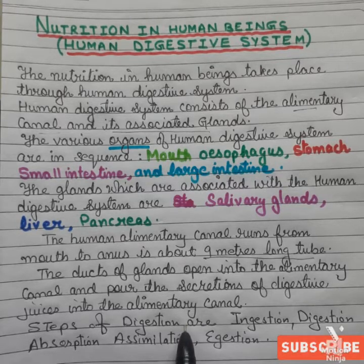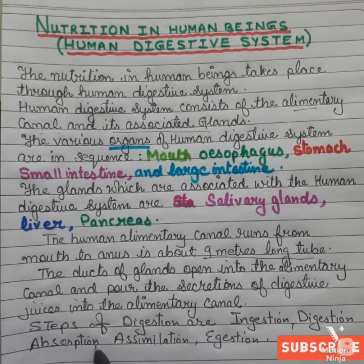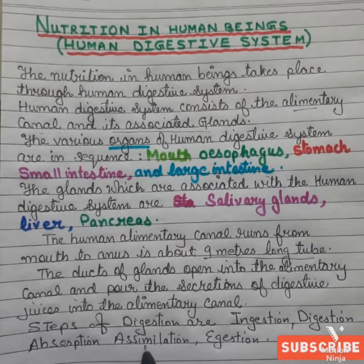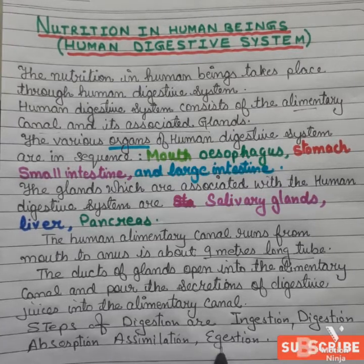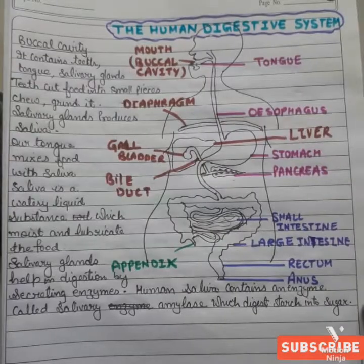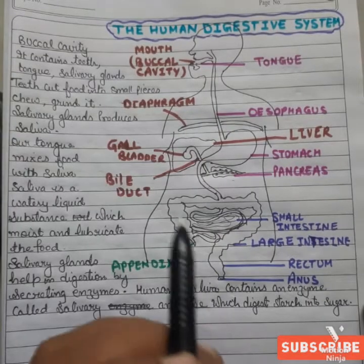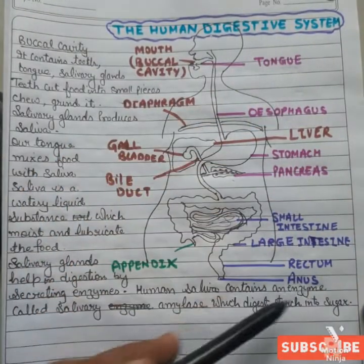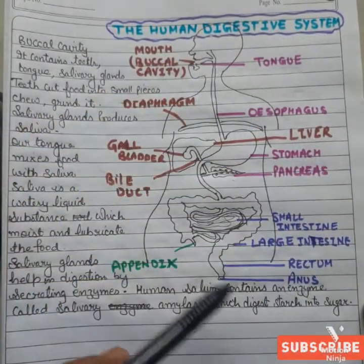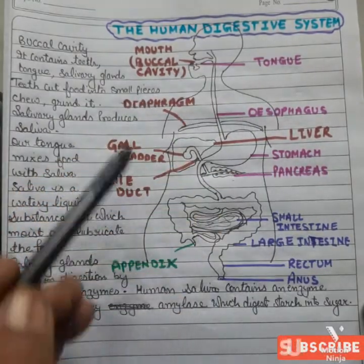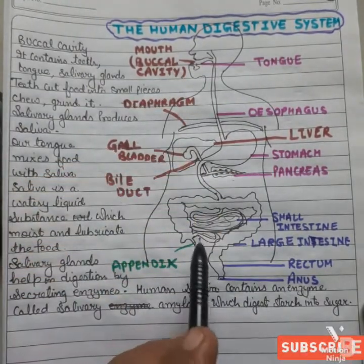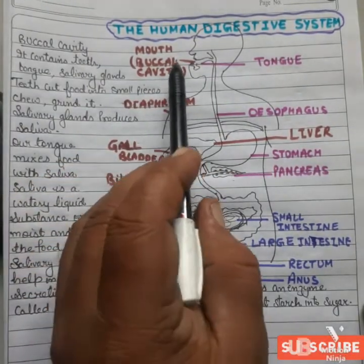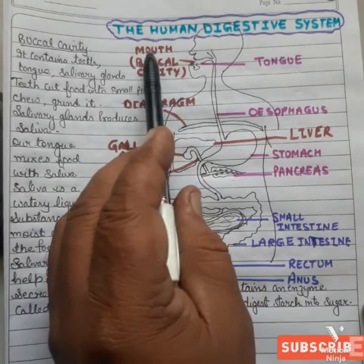The steps of digestion are: first, ingestion; second, digestion; third, absorption; fourth, assimilation; and last, egestion. Now we are going to discuss the diagram of the human digestive system. Digestion starts from the mouth.